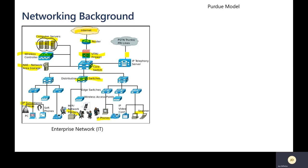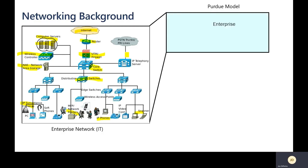When we talk about the OT network, there's a term called the Purdue model, which gives a different layering of information. If we look at the IT network — called the enterprise network — that'll be at level four and five of the Purdue model. So we take that entire IT network and compress it into levels four and five.